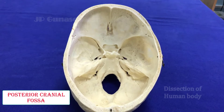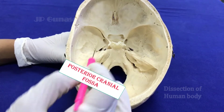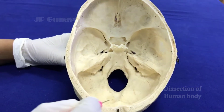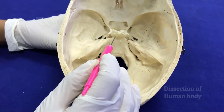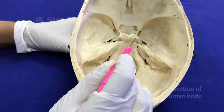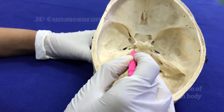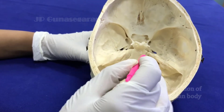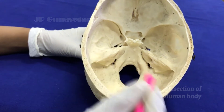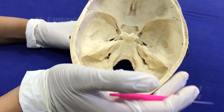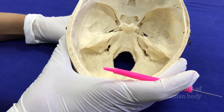Now let us see the features of posterior cranial fossa. As you can see here, this is the largest of the cranial fossae. It is bounded anteriorly in the median plane by dorsum sellae, on either side by the superior margin of the petrous part of temporal bone, and behind and laterally by the squamous parts of occipital bone.